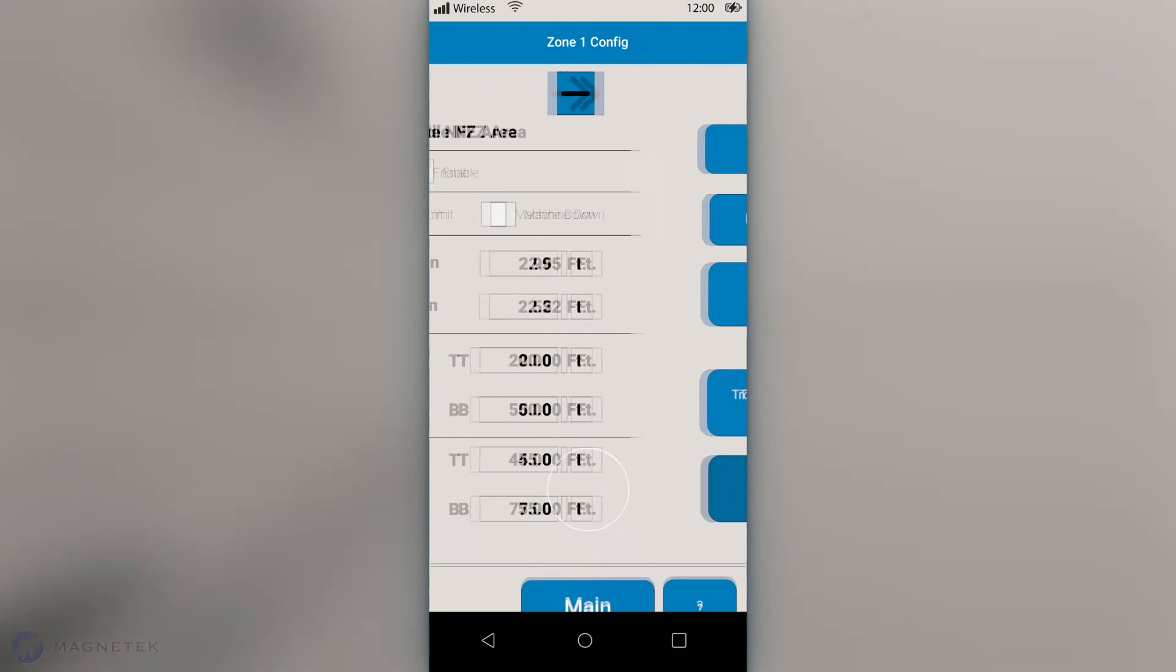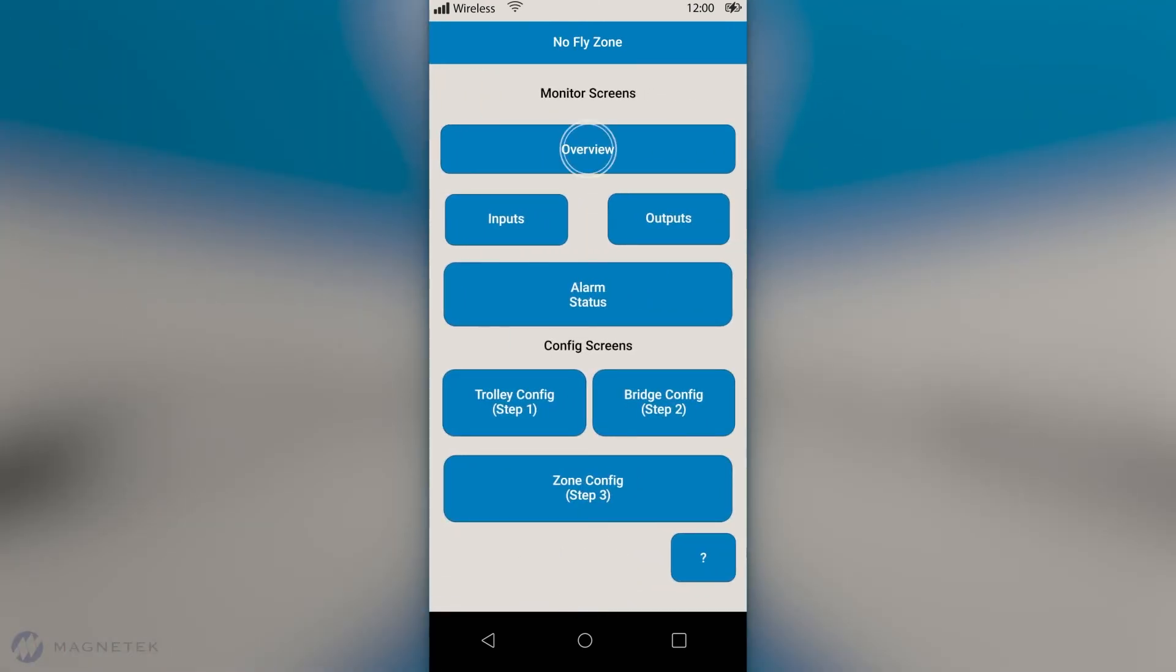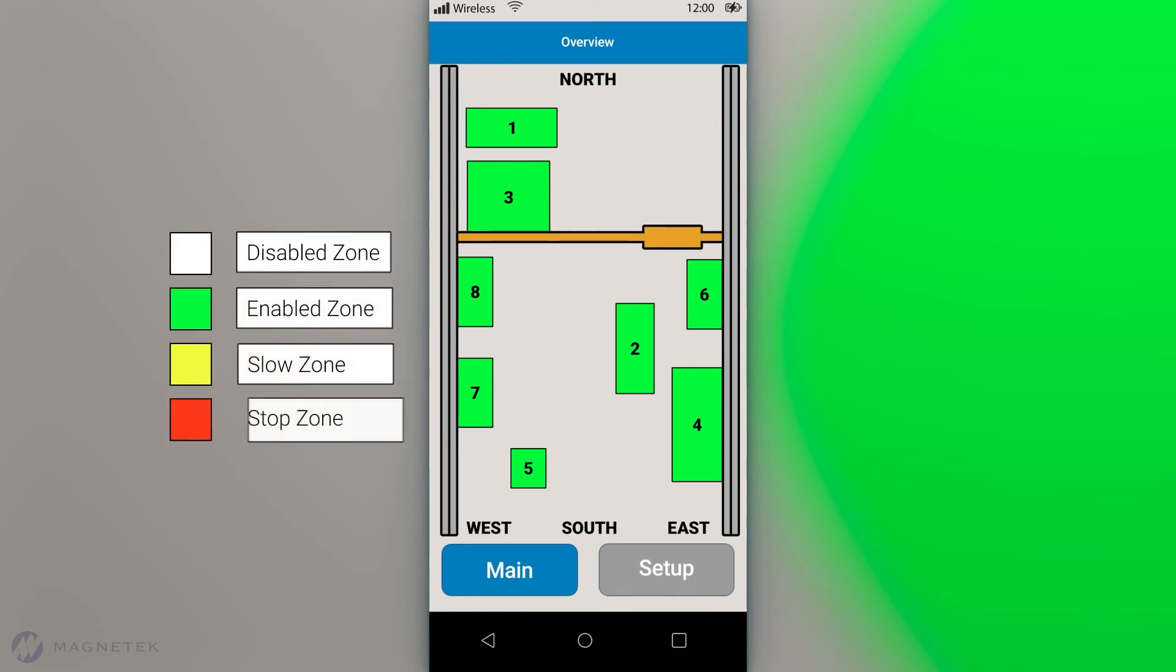The Intelliprotect interface provides an overview that displays plant floor layout, active zones, and crane movement, as well as control system status information.